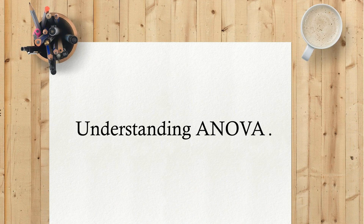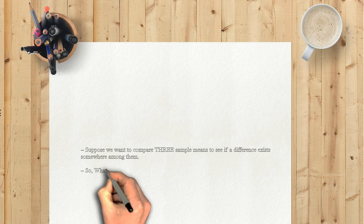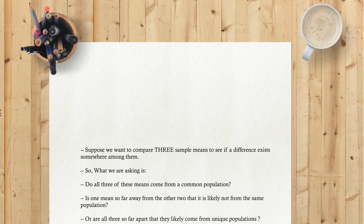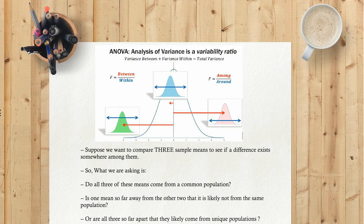Understanding ANOVA. Suppose we want to compare three sample means to see if a difference exists somewhere among them. What we are asking is: do all three of these means come from a common population? Is one mean so far away from the other two that it is likely not from the same population? Or are all three so far apart that they likely come from unique populations?